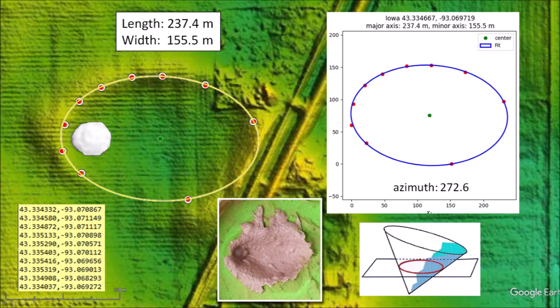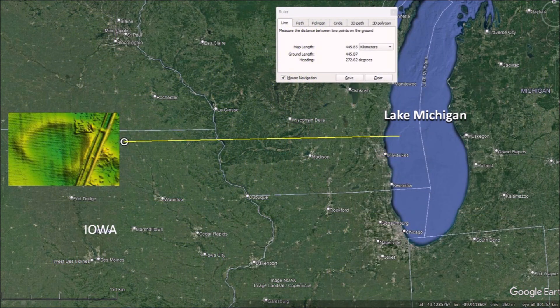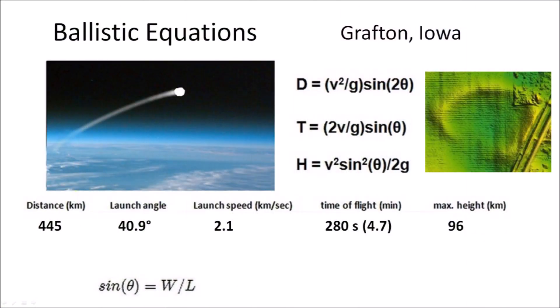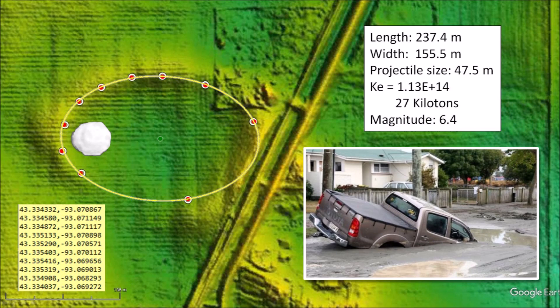The elliptical basin has an azimuth of 272.6 degrees, which leads directly to Lake Michigan at a distance of 445 kilometers. Using ballistic equations, we can calculate that the glacier ice boulder that made this basin was launched at a speed of 2.1 kilometers per second. It had a flight time of 4.7 minutes and reached a height of 96 kilometers above the surface of the Earth — just short of the 100-kilometer boundary of space. The energy of the impact was equivalent to 27 kilotons of TNT, producing seismic vibrations of magnitude 6.4.